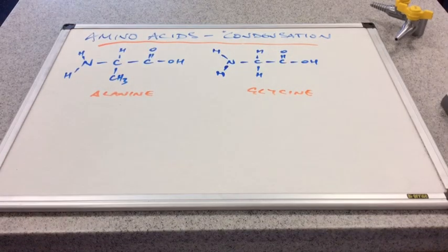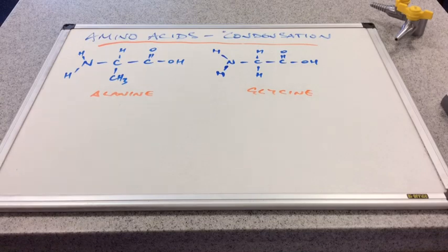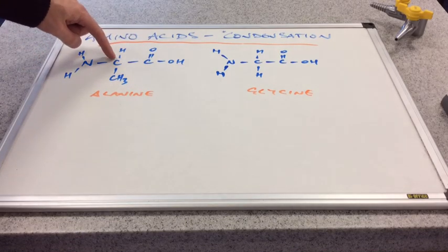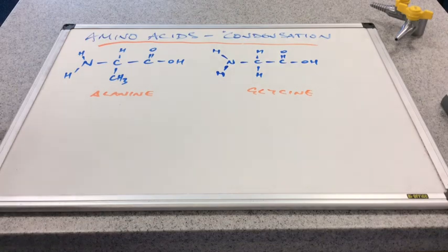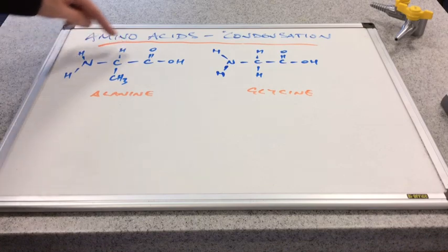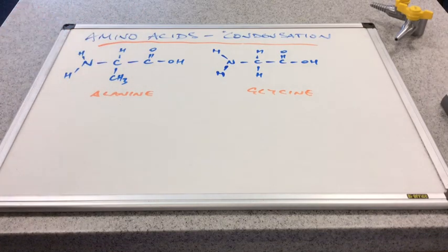If we look at the displayed formulae now for the two amino acids that I had before, we had alanine and glycine. So remember these are alpha amino acids. The NH2 group and the COOH group are bonded to the same carbon. So they've got the same general structure with this carbon with the hydrogen on, NH2, COOH and then this variable R group.